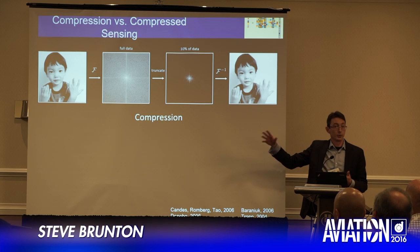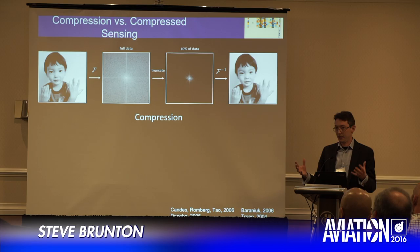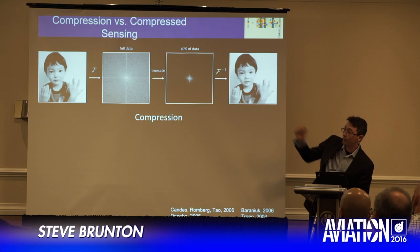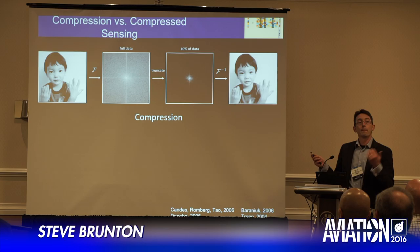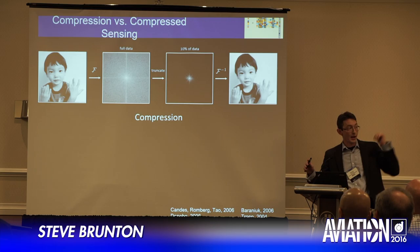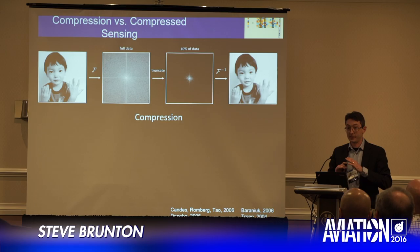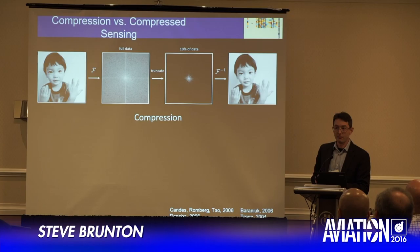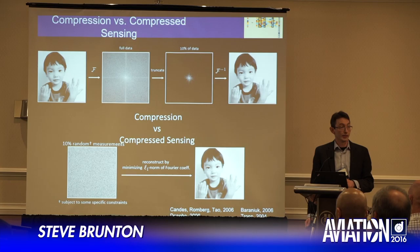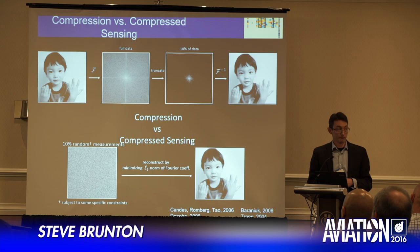I'm going to illustrate compressed sensing by comparing with classical compression. The idea of compression is that most signals are sparse in some appropriate transform basis. If I take a megapixel image and fast Fourier transform it, I get a log distribution of Fourier coefficients. It turns out that if I zero out all the small Fourier coefficients and only keep the large magnitude ones, when I inverse Fourier transform I basically get the same picture. This is the basis of JPEG and MP3 compression. This begs the question: if I'm going to collect a million data points just to throw away 90–99% of them, maybe I could get away with measuring just 10% of the measurements in the first place and infer what those large non-zero Fourier coefficients had to be.